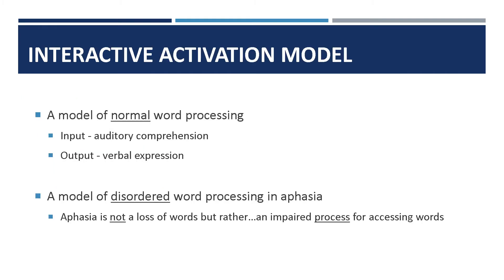What exactly is the interactive activation model? The IA model is a framework for explaining normal language and for explaining what goes wrong in aphasia. Word processing is used for both understanding and producing language. In aphasia, there is a disruption in word processing rather than an actual loss of words. The IA model helps explain this disruption.